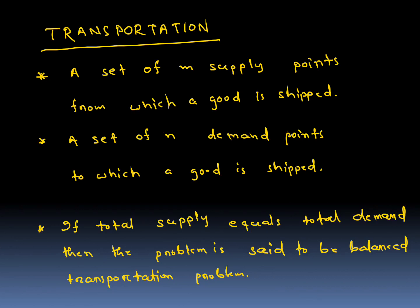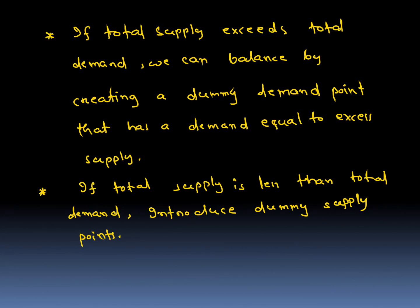Transportation involves a set of m supply points from which a good is shipped, and a set of n demand points to which the good is shipped. If total supply equals total demand, the problem is a balanced transportation problem. If supply exceeds demand, balance by creating a dummy demand point equal to the excess supply. If supply is less than total demand, balance by introducing dummy supply points.